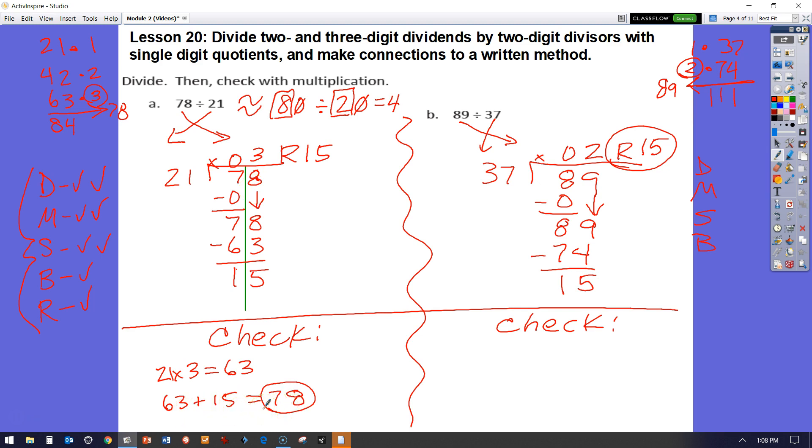Let's go here. So we have 37 times 2 equals 74. And then we have 74 plus 15. 5 plus 4 is 9. 1 ten plus 7 tens is 8 tens. So we have our product from our multiplication is equal to our dividend in our division. So we know that that is correct.